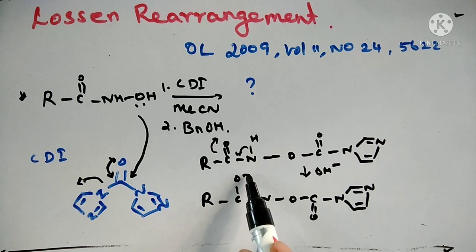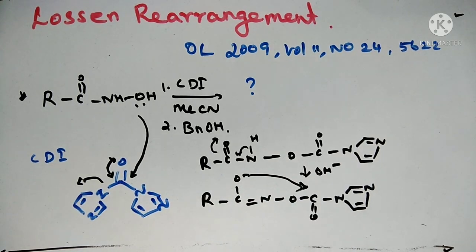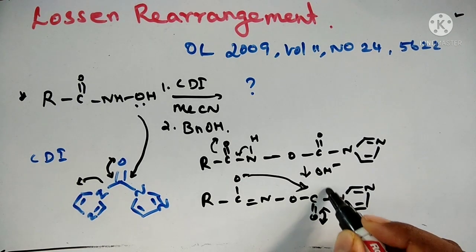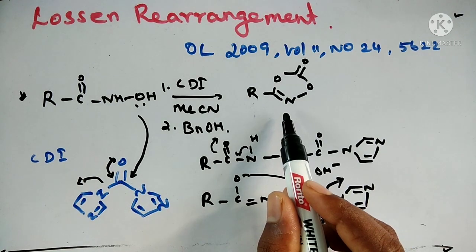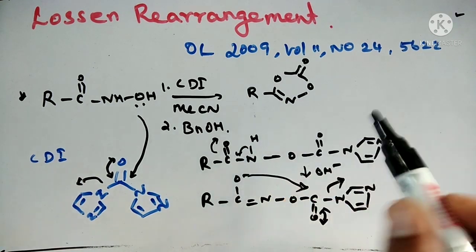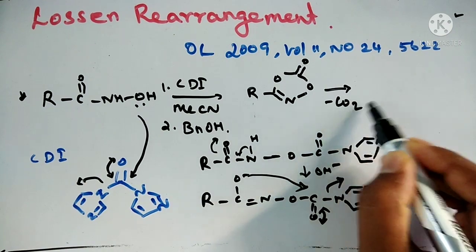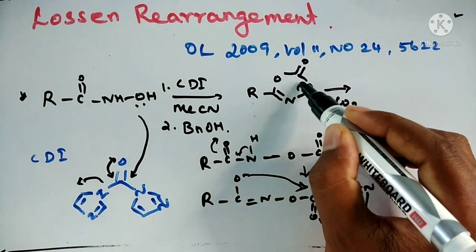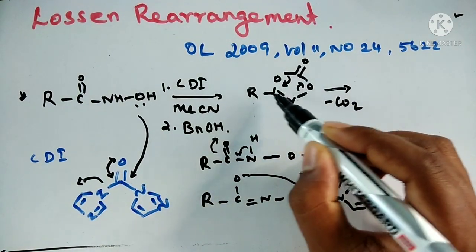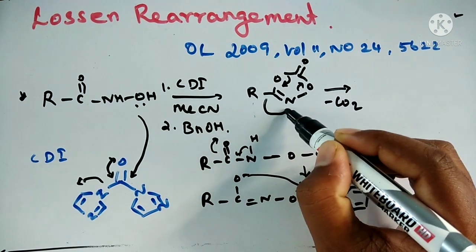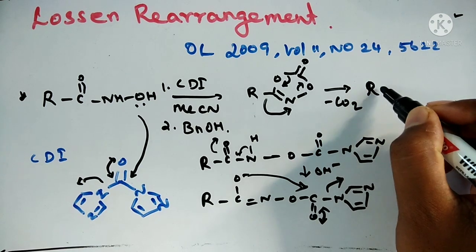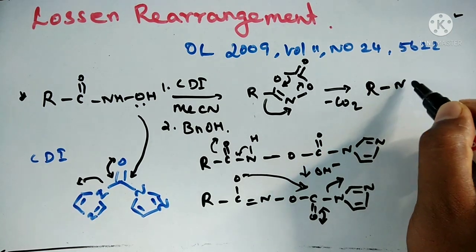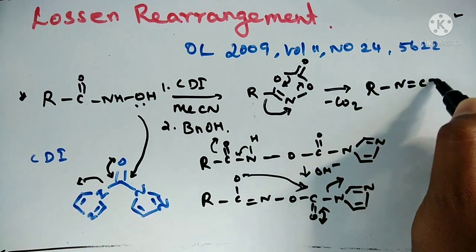The O-minus will attack the carbonyl position, leading to elimination of diimidazole. Then, simultaneous elimination of the leaving group and migration of the R group leads to formation of isocyanate: R-N=C=O.